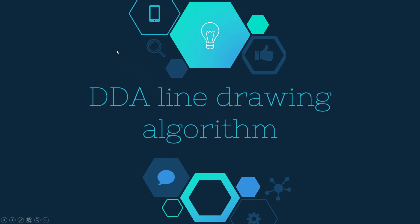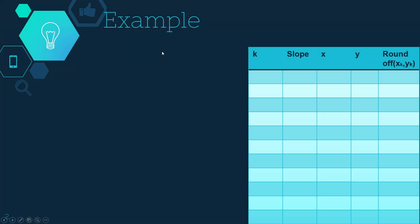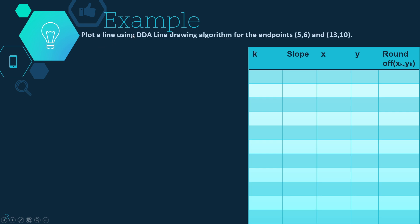Hey guys, welcome to another computer graphics tutorial. Today we'll be looking at a DDA line drawing algorithm example. So let's get started. The example is: plot a line using the DDA line drawing algorithm for the endpoints (5, 6) and (13, 10). We are given these two endpoints and we have to draw a line using the DDA line drawing algorithm.